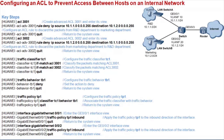After that, create ACL 3002 and enter the ACL view. Configure an ACL rule to discard the packets from the marketing department to the R&D department — packets from IP address segment 10.1.2.0 destined for IP address segment 10.1.1.0. Then return to the system view. Configure the traffic classifier TC1 to classify packets that match ACLs 3001 and 3002, then return to the system view.